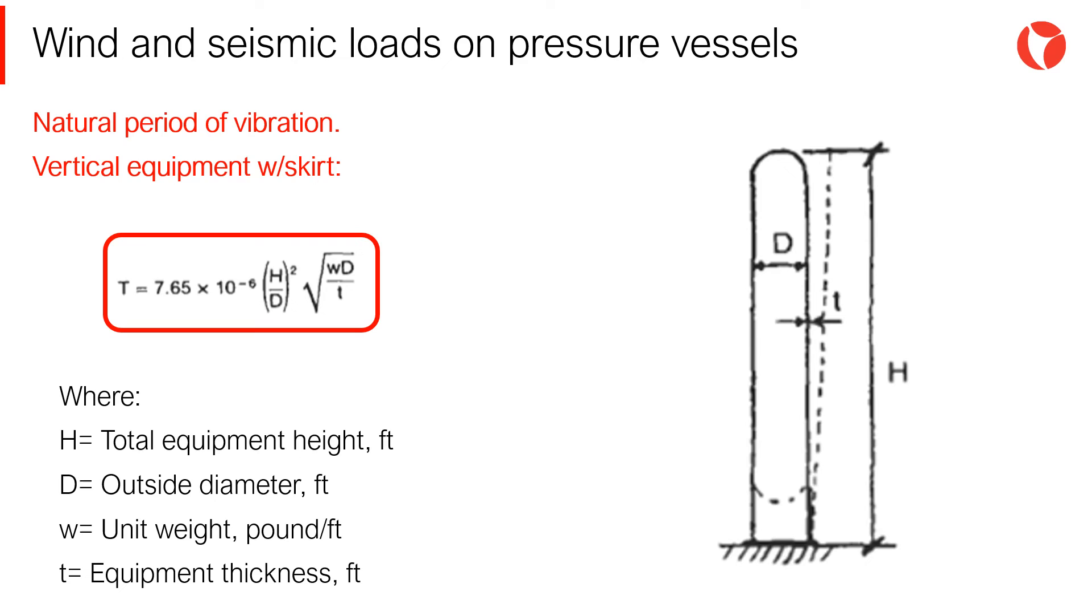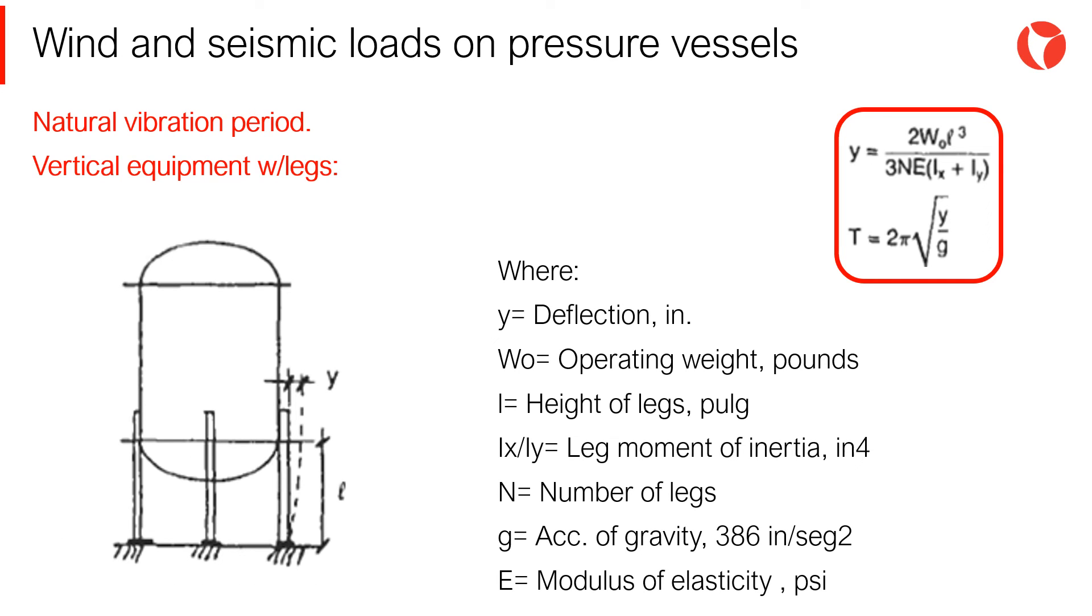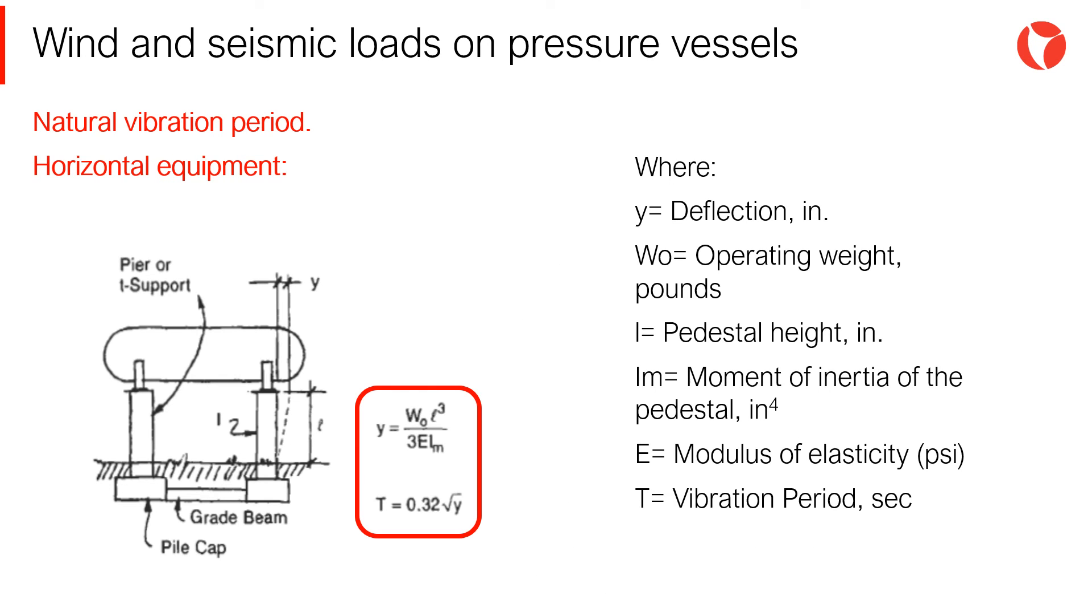The following slides describe the different conventional equations proposed by Dennis Moss in Pressure Vessels Design Manual. It is possible to find equations for most configurations of pressure vessels, for example, vertical supported by a skirt seen in the picture, or vertical vessels supported by legs, or horizontal equipment supported on saddles and many others.